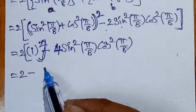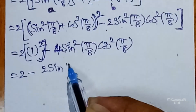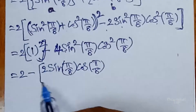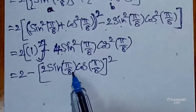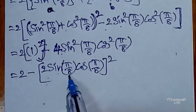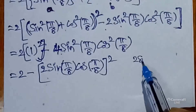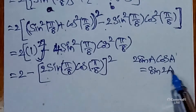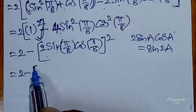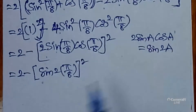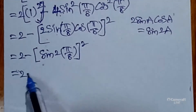Now 4·sin²(π/8)·cos²(π/8) can be written as [2·sin(π/8)·cos(π/8)]². Using the formula 2 sin a cos a = sin 2a, where a = π/8, we get sin(2 × π/8) = sin(π/4) whole squared. So the expression becomes 2 − sin²(π/4).